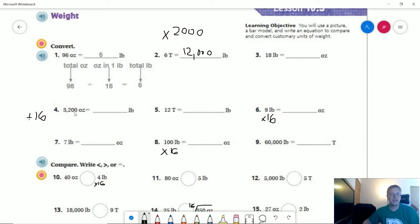The next one I'm going to do 3,200 ounces divided by 16, and that should give me 200 pounds.